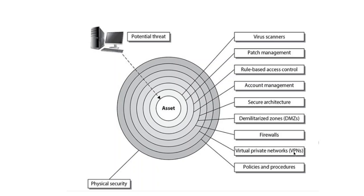The next layer is policy and procedures — you have to apply governance procedures properly to give access to individuals and entities. The last layer is physical security.